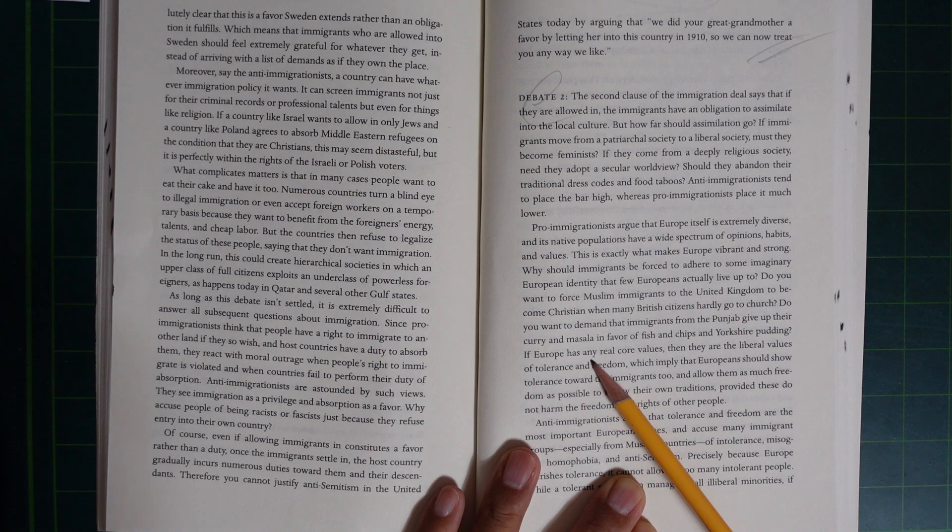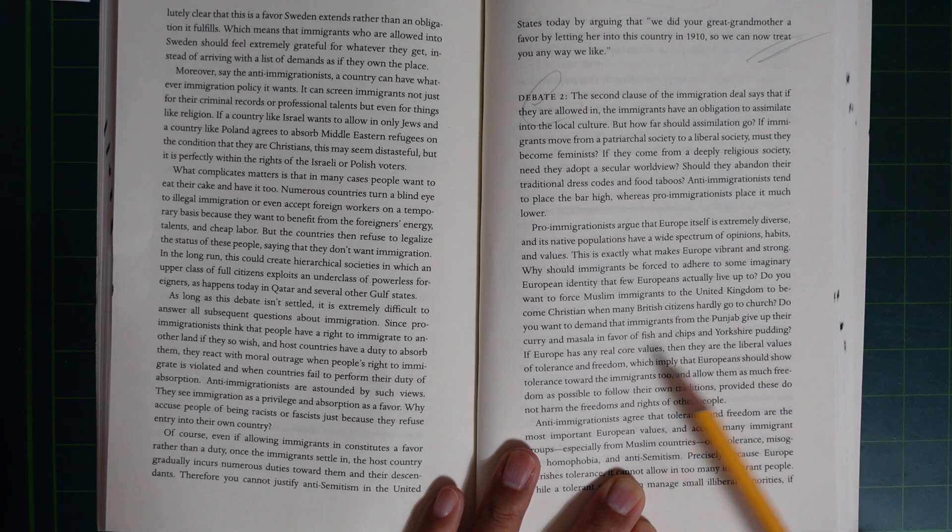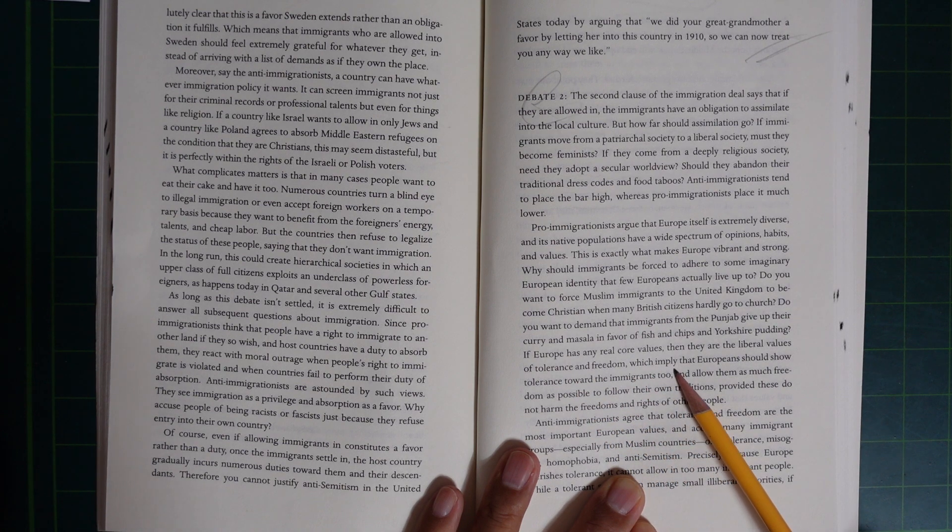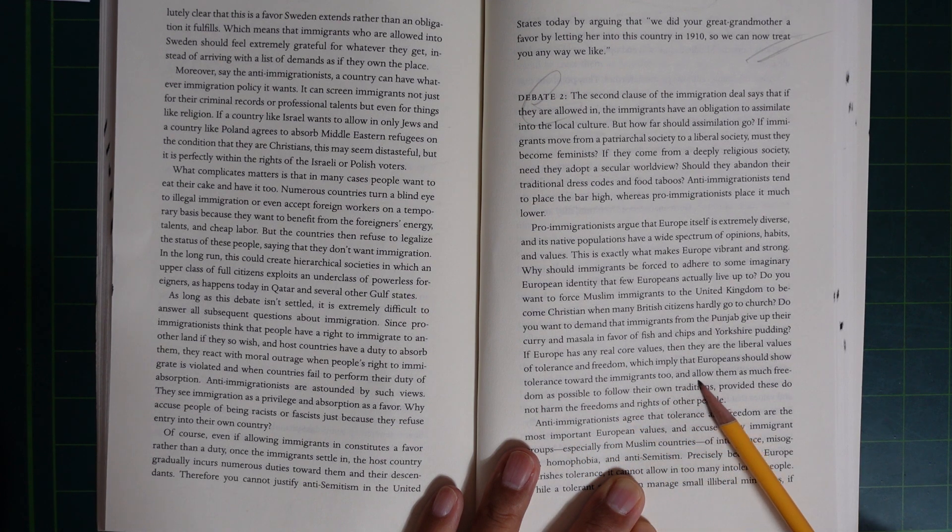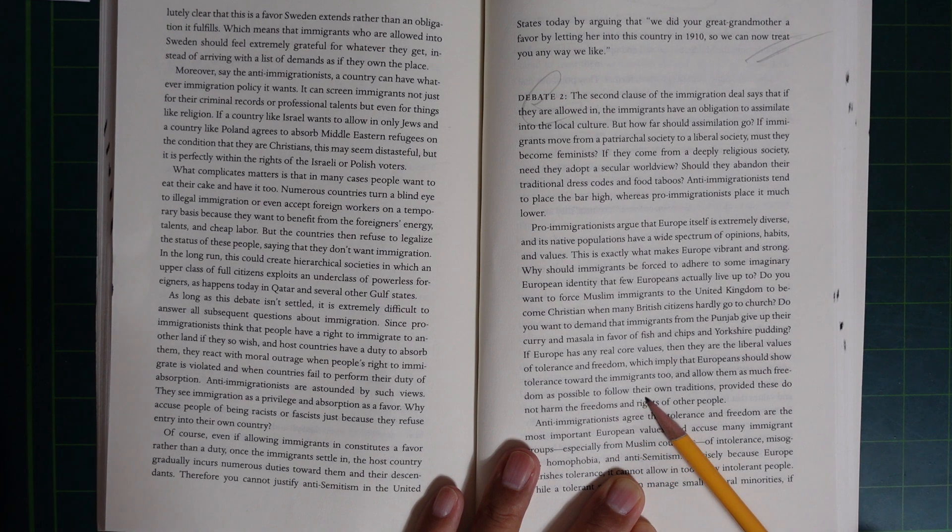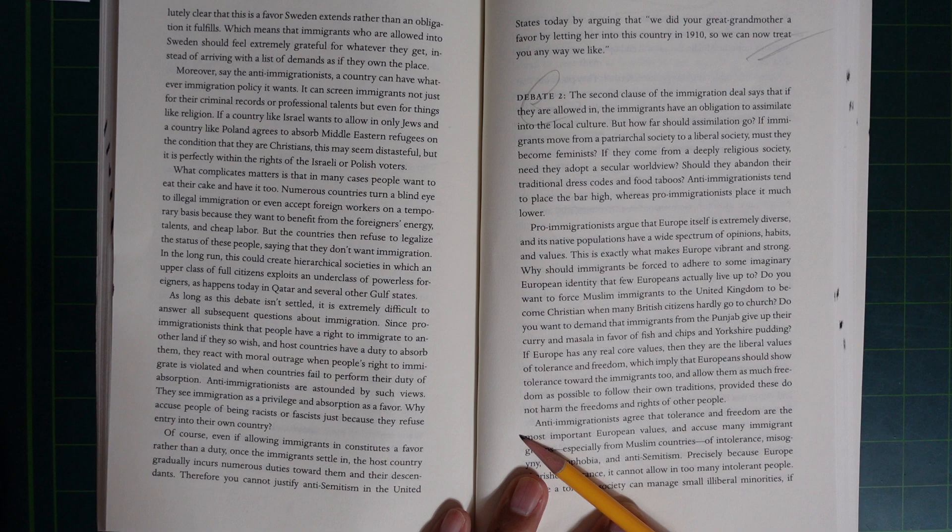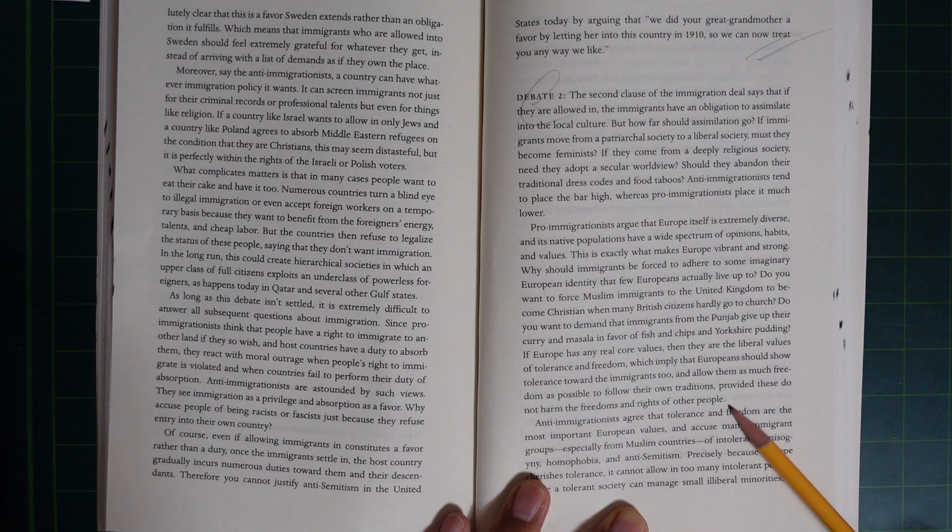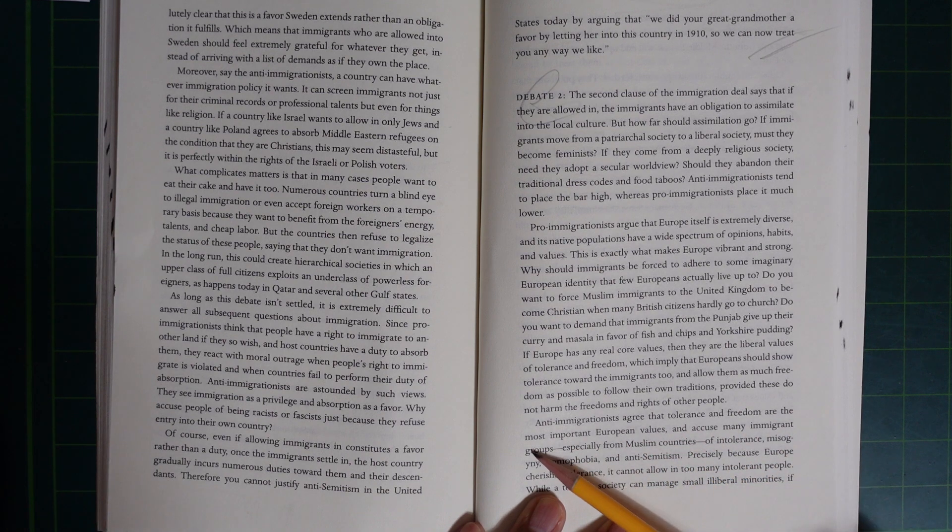If Europe has any real core values, then they are the liberal values of tolerance and freedom, which imply Europeans should show tolerance towards immigrants too and allow them as much freedom as possible to follow their own traditions, provided these do not harm the freedom and rights of other people.